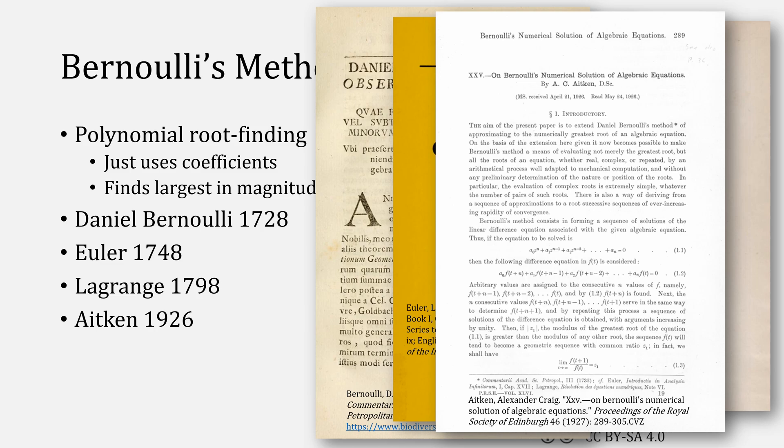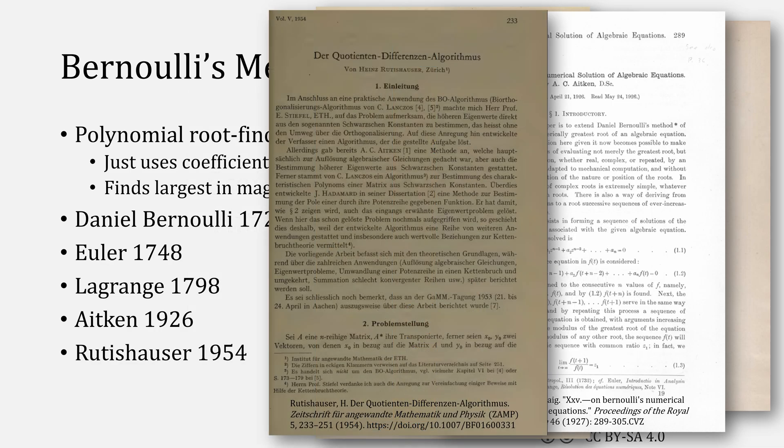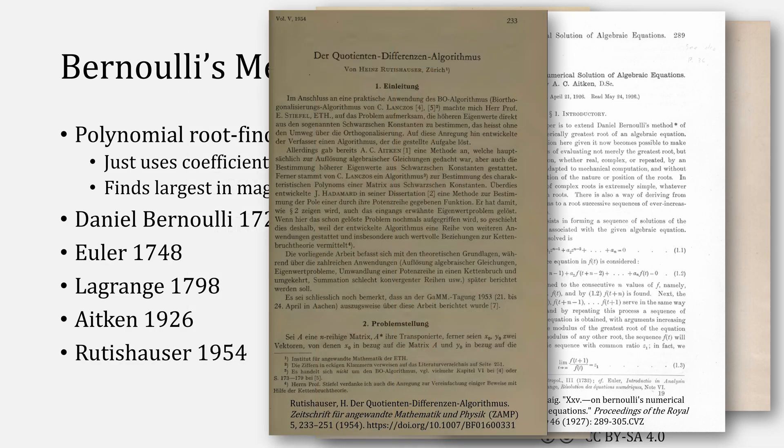I've actually discussed this on this channel before in my video on Stephensen's method with Aitken's delta-squared. The last major advancement came in 1954 by Rutishauser, in a paper that I'll discuss at the end of this video.